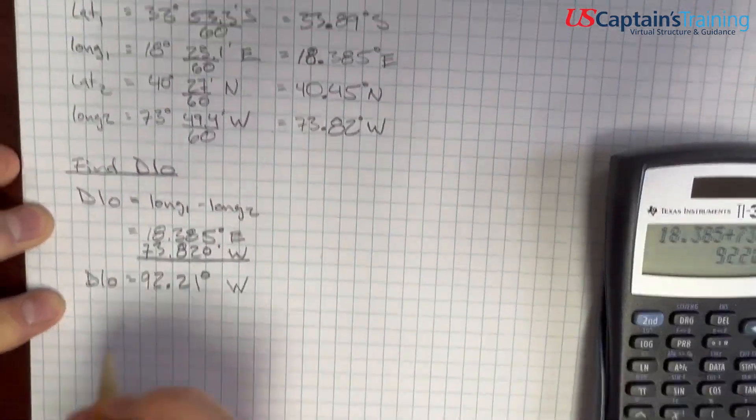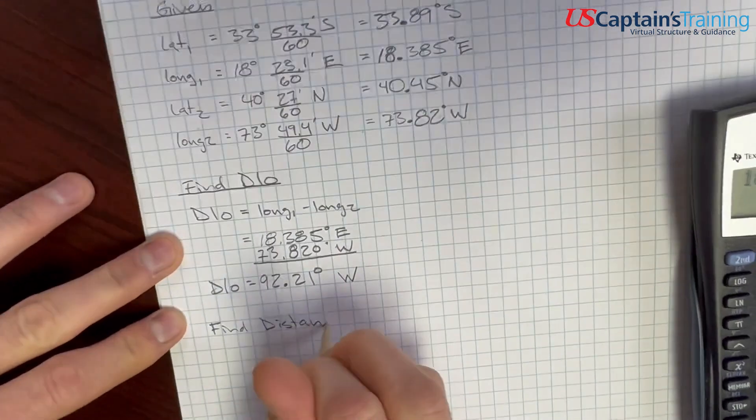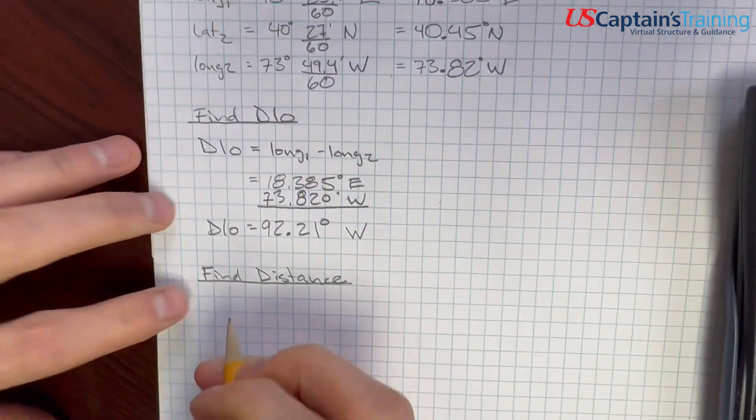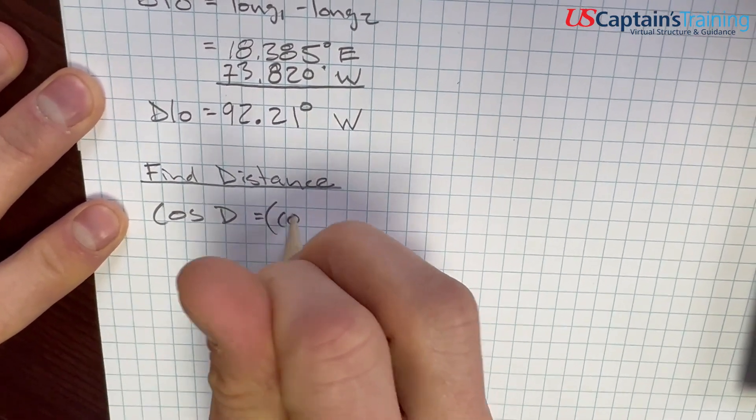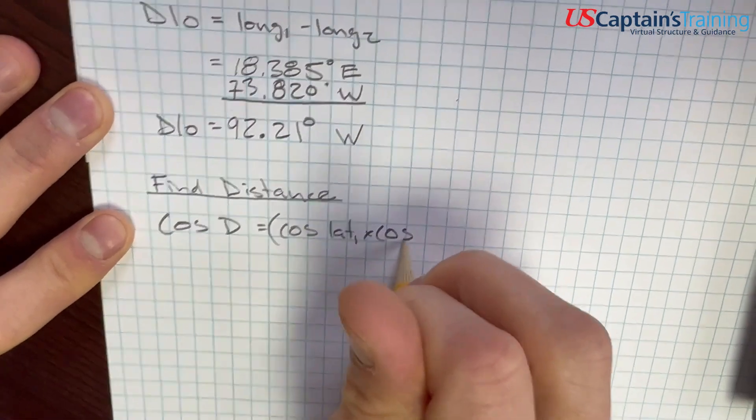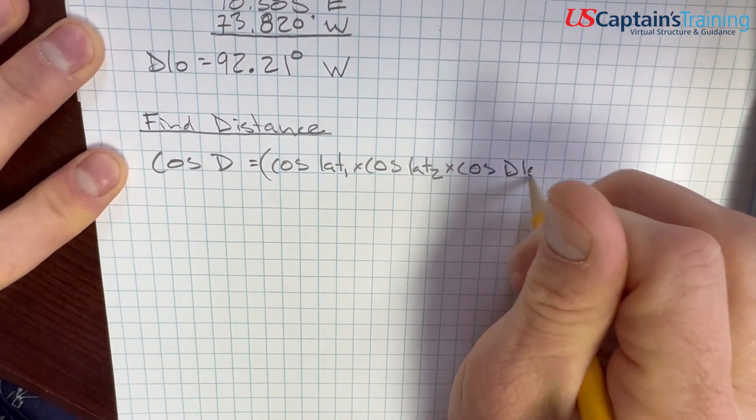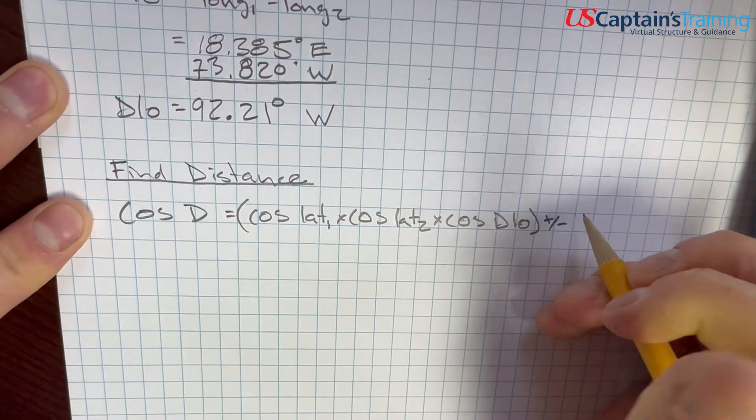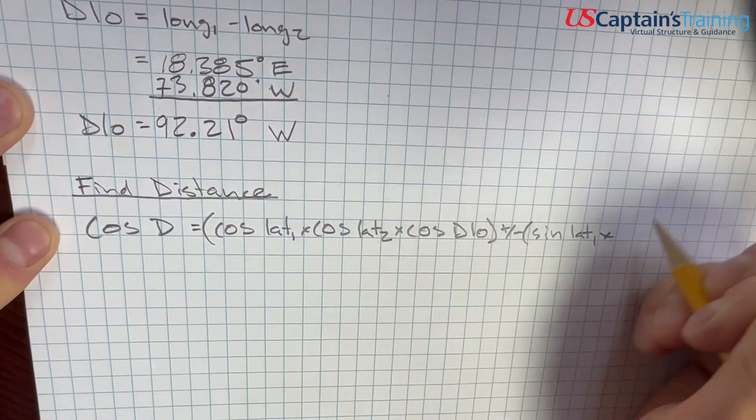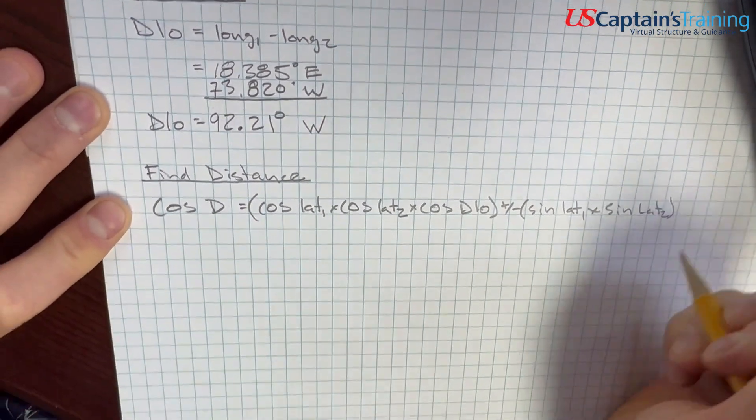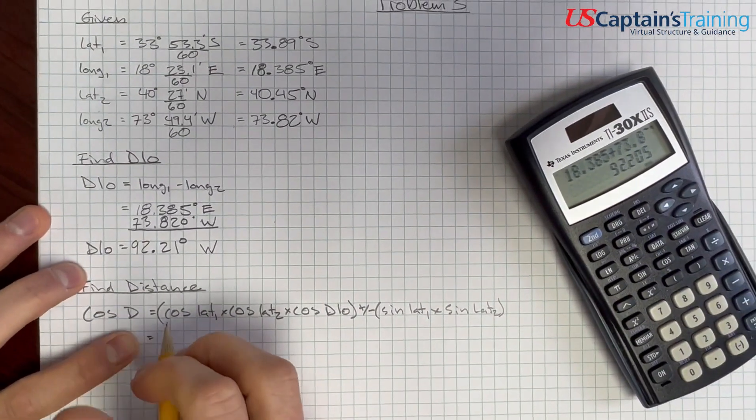Okay, now we need to find distance. Let's find distance. To find distance, we say this formula. Cosine distance equals cosine lat 1 times cosine lat 2 times cosine D low plus or minus, depending on if we cross the equator, sine lat 1 times sine lat 2. And now we plug it in.